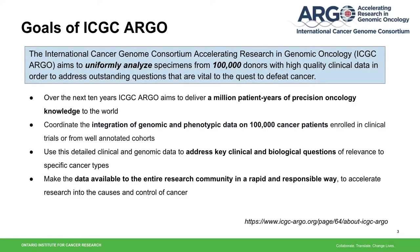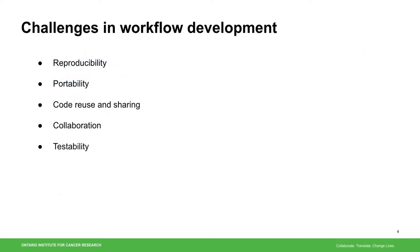The development of WFPM started from the ICGC-ARGO initiative, so let me briefly introduce it here. ICGC-ARGO aims to uniformly analyze specimens from 100,000 donors with high quality clinical data in order to address outstanding questions that are vital to the quest to defeat cancer. To achieve ambitious goals of delivering precision oncology knowledge derived from clinical and genomic data, uniform data analysis is key. Uniform analysis on large, complex, and globally distributed data requires analytic workflows to address these challenges.